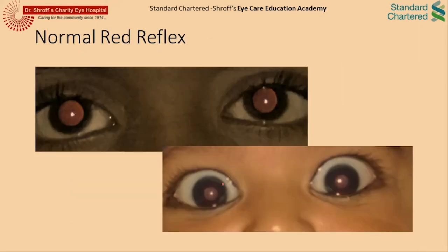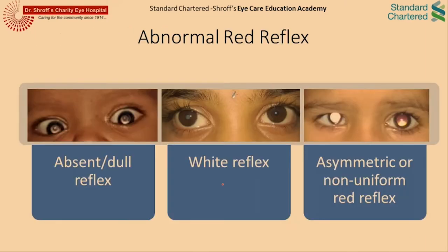These two photographs show the appearance of a normal red reflex — the upper one with dilated pupils and the lower one with undilated pupils. A normal red reflex is symmetric, homogeneous, and illuminates the entire pupil uniformly. An abnormal red reflex can be categorized into three types: a dull or absent reflex, a wide reflex, or a non-uniform or asymmetric reflex.